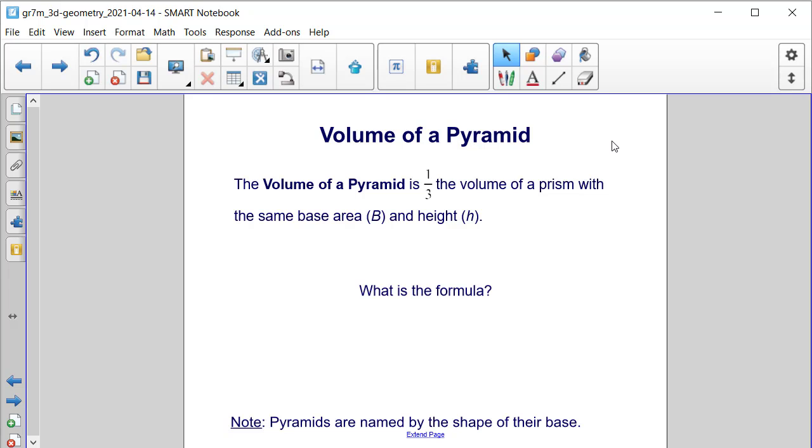The volume of a pyramid is one-third the volume of a prism with the same base area (capital B) and height H. What would be the formula for the volume of a pyramid? Well, the volume formula is going to be one-third times the area of the base times the height.